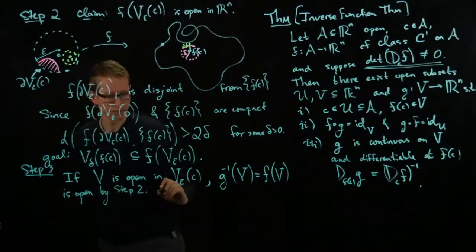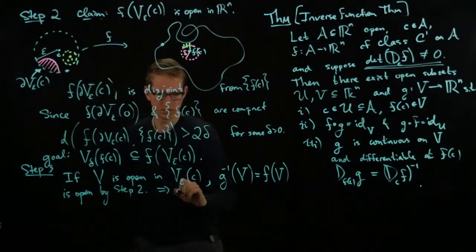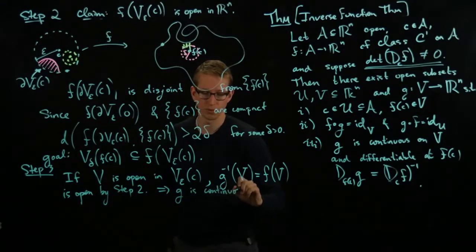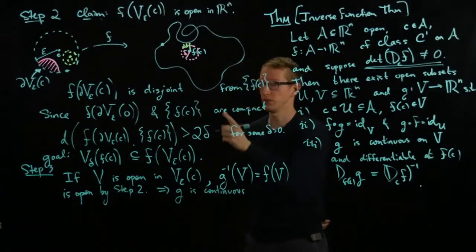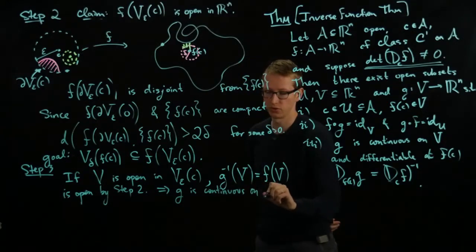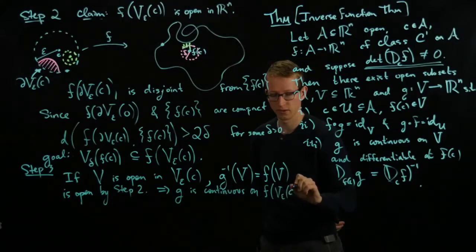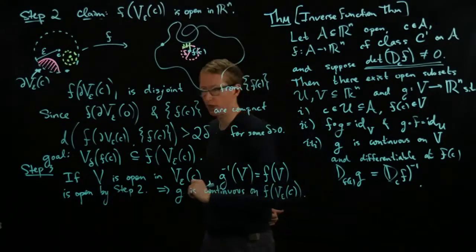So that shows that G is continuous on its domain, and we make the domain equal to the image of this open disk around C.